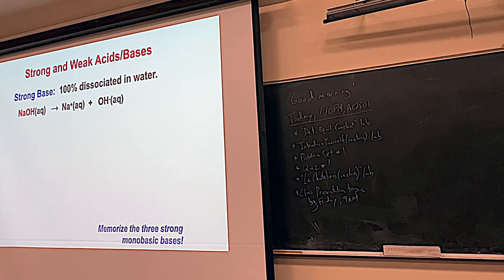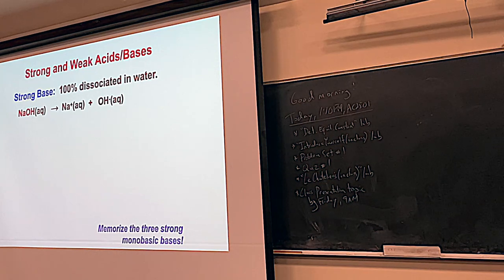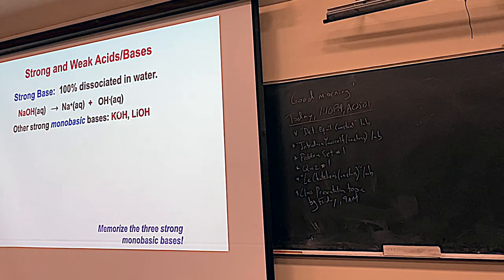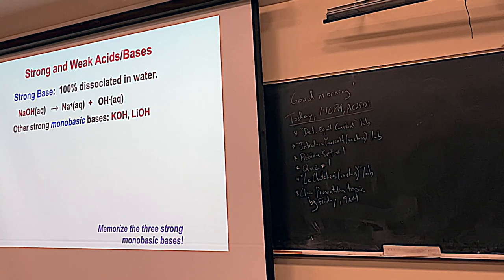Strong bases are the yin to yang for acids. Bases are hydroxide-creating species. Strong bases, like strong acids, don't stay together — they break up. Sodium hydroxide in water creates the sodium ion and hydroxide. Hydroxide is what makes a base a base. Notice the one-sided arrow — strong bases have one-directional reactions. There are basically only three monobasic strong bases you need to know: sodium hydroxide, potassium hydroxide, and lithium hydroxide.